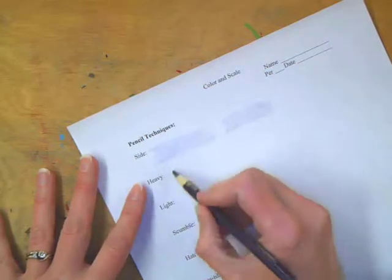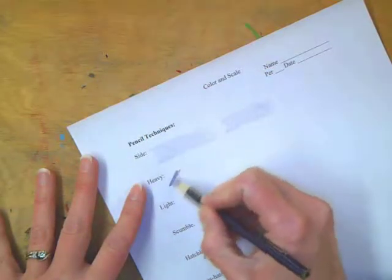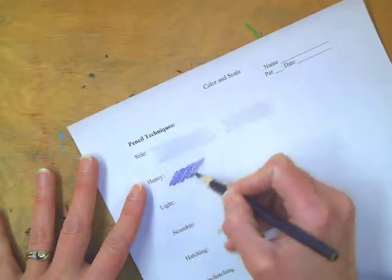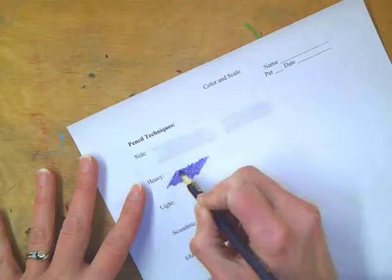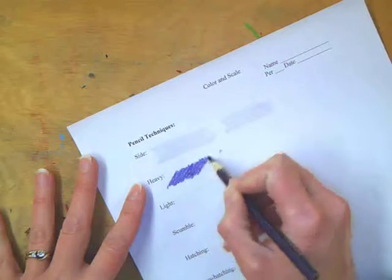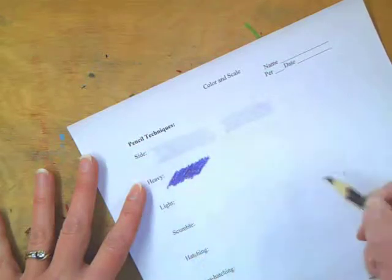Heavy - you can go back to holding your pencil like you normally do, and press heavy. Color it in heavily. You can go back on top of it and make it even heavier. So this is taking more pressure.